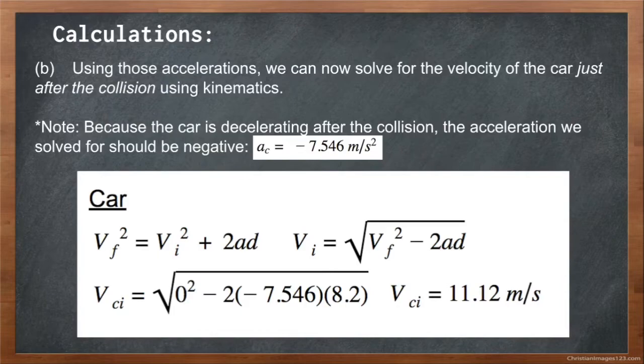Using our kinematics equations, we have the equation velocity final squared equals velocity initial squared plus 2ad. When we rearrange for velocity initial and plug in our values of negative 7.546 meters per second for the acceleration and 8.2 for the distance it traveled, we solved that the velocity of the car initially is 11.12, that is, just after the collision.